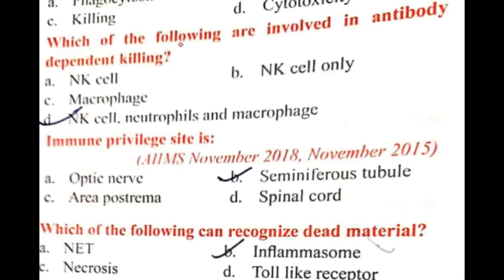Welcome to a new lecture on previous year questions. Which of the following are involved in antibody dependent killing? NK cells, neutrophils, and macrophages are involved in antibody dependent cell-mediated cytotoxicity (ADCC). This is the killing of an antibody-coated target cell by a cytotoxic cell, which can be an NK cell, neutrophil, or macrophage.